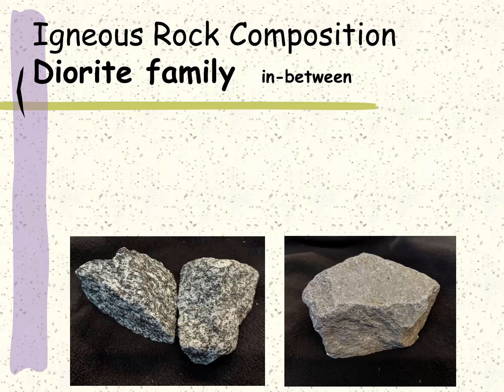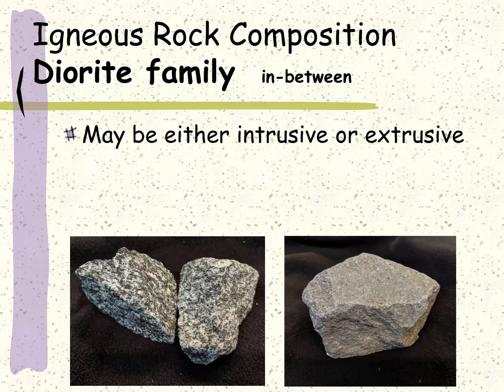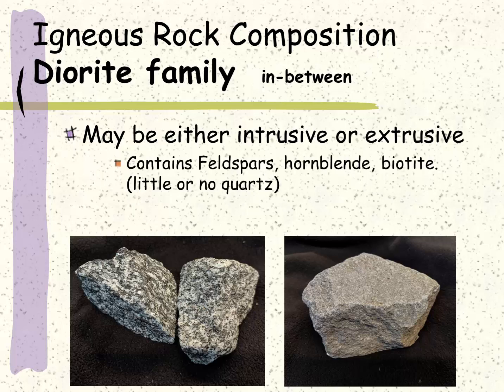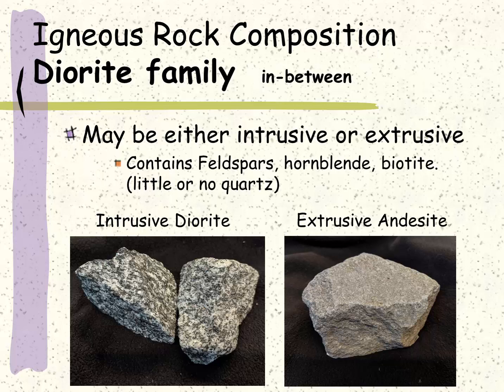Then we also have an in-between. If we look at the chemical compositions, we really have a spectrum of different concentrations of minerals, and the diorite family is the in-between. There are examples that are either intrusive or extrusive. They contain a significant amount of feldspars, also some hornblende and biotite. The key distinction is there's little to no quartz in the diorite-type rocks. We have the intrusive variety, which is diorite, and the extrusive variety, which is andesite. Many of the volcanoes that occur along subduction zones are andesite lava-producing volcanoes — this sample from Mount Rainier in Washington.